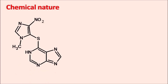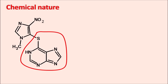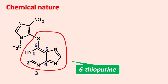Looking at the chemical structure of azathioprine, we can clearly observe it contains a purine ring system with a mercapto group attached. Numbering the purine ring from one to six, the mercapto (thio) group is attached at the sixth position. That is why azathioprine is a derivative of 6-thiopurine, and the suffix 'thioprine' in its name indicates it is a thiopurine derivative.